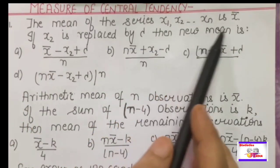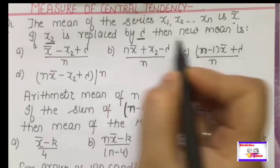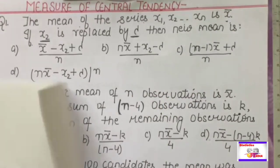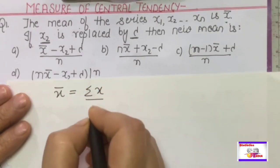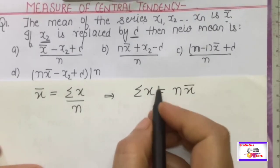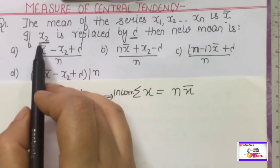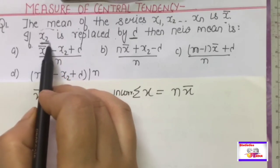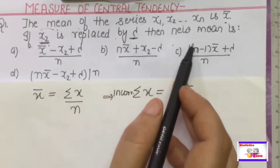The mean of the series x1, x2, ..., xn is x̄. If x2 is replaced by lambda, then we want the new mean. We have the given series x1, x2, ..., xn with mean x̄, so by definition x̄ = Σx/n, meaning Σx = n·x̄. Now this summation of x is incorrect because x2 is replaced by lambda.